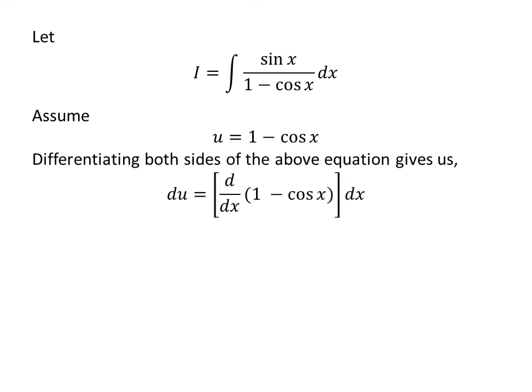Taking differential of both sides gives us differential of u is equal to derivative of 1 minus cosine x with respect to x times differential of x. As derivative of constant 1 is 0 and derivative of cosine x is minus sin x, so differential of u is equal to minus of minus sin x times differential of x. Minus of minus is plus, so differential of u is equal to sin x times differential of x.